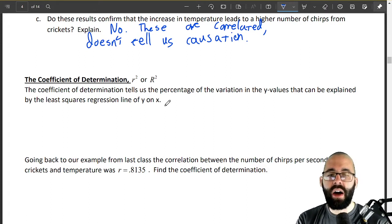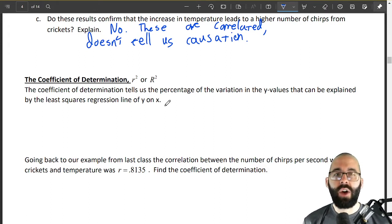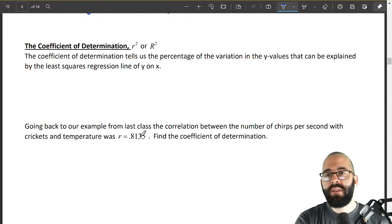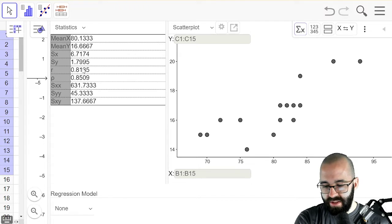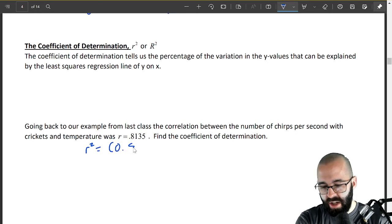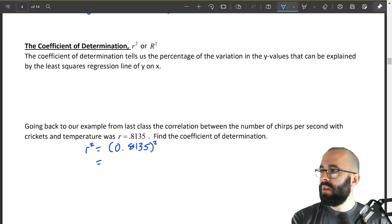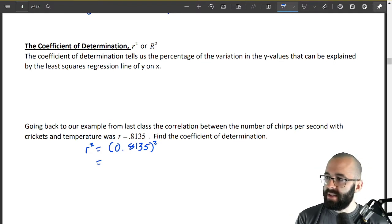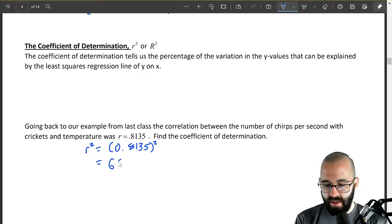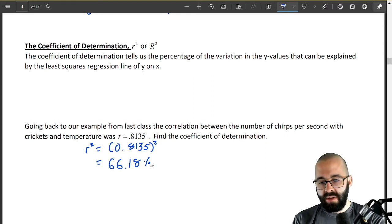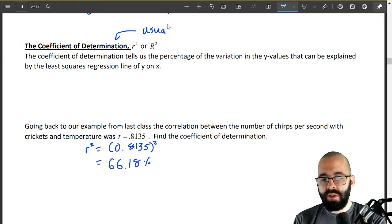It basically says it's one way of modeling the relationship between x and y and how closely correlated they are. Then r squared value is just found by squaring this r. So in our case r squared is going to be 0.8135 squared which is going to be approximately equal to 0.6618.